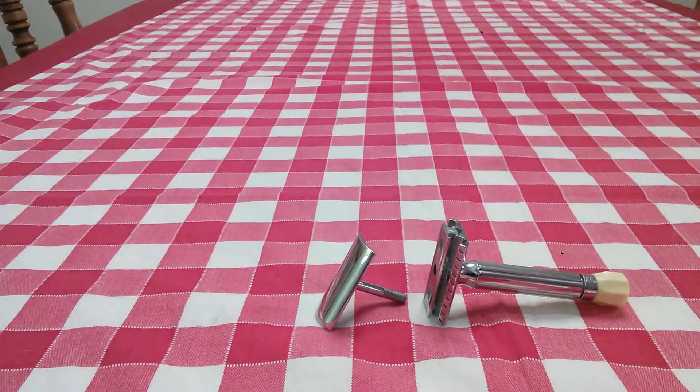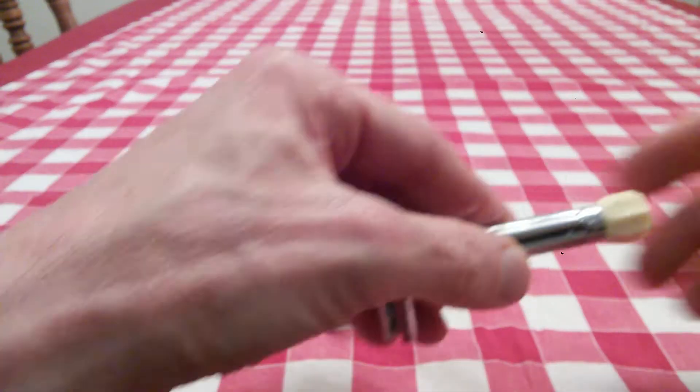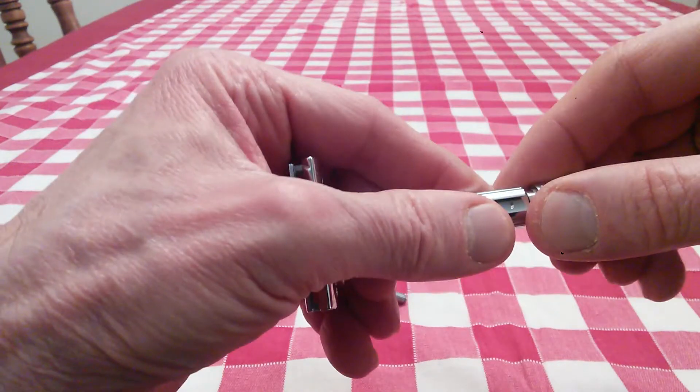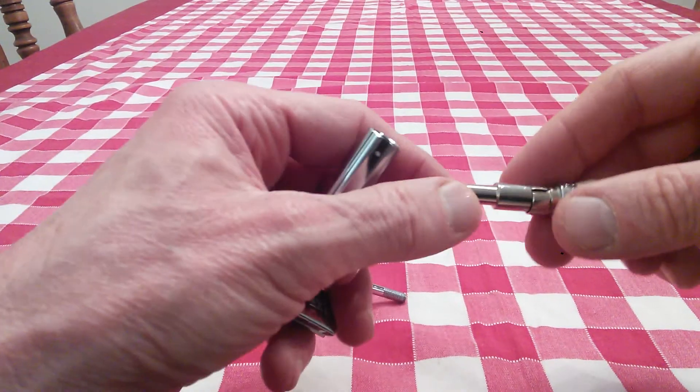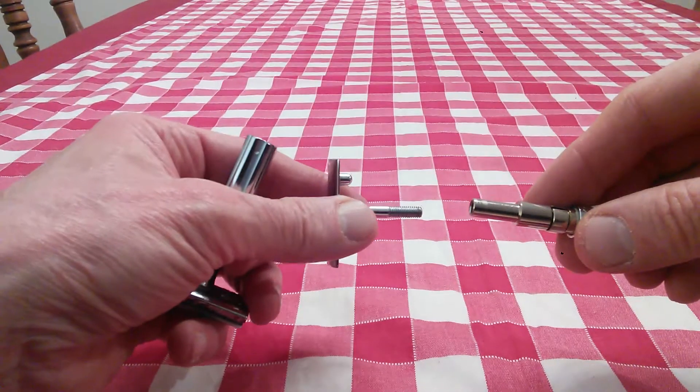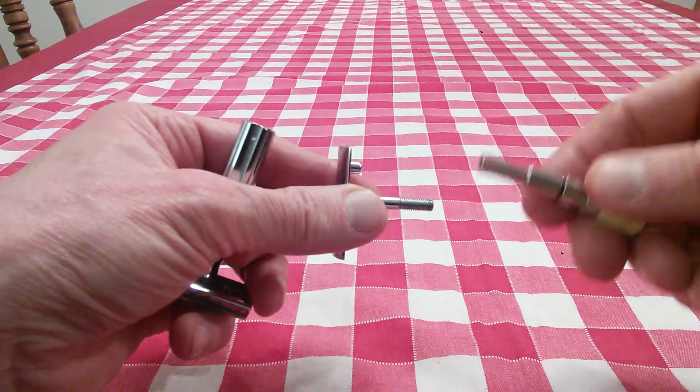And in the same way, it's technically a three-piece razor in that it has this inner barrel with a little compression clip, and this is where the threaded part of this shaft threads into it.